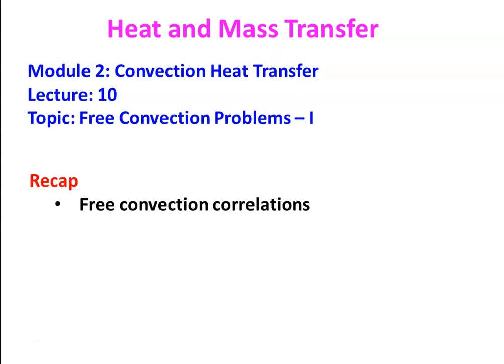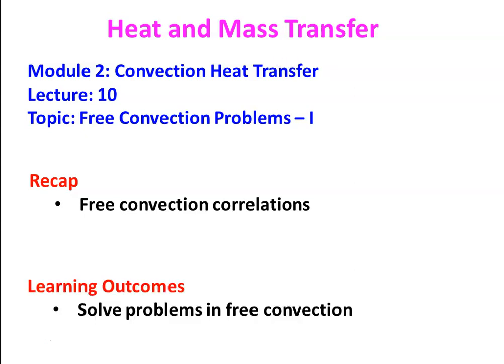In the previous session, we discussed free convection and defined the boundary layer, the Grashof number, and Rayleigh number for free convection heat transfer. We have seen various correlations for free convection heat transfer calculation for vertical plate, horizontal plate, cylinder, horizontal cylinder, and sphere. Now using those correlations, we will solve few problems. The learning outcome is that the student will be able to solve problems in free convection using these correlations.